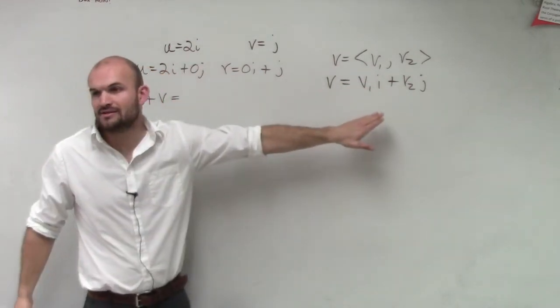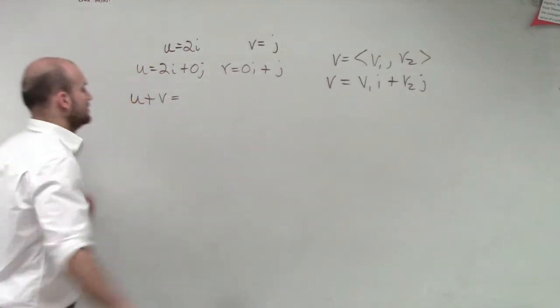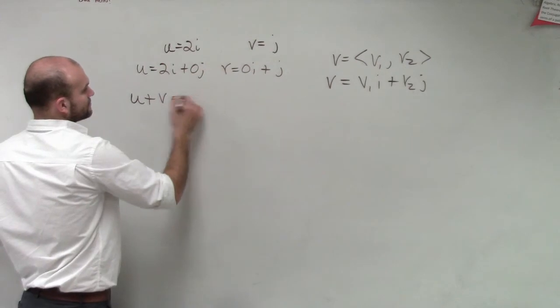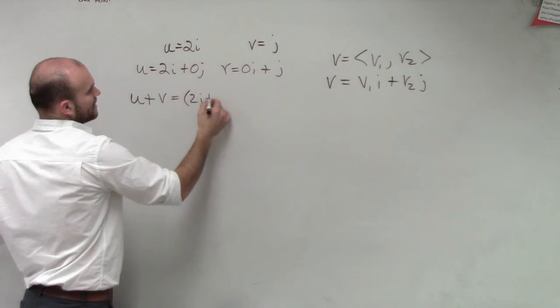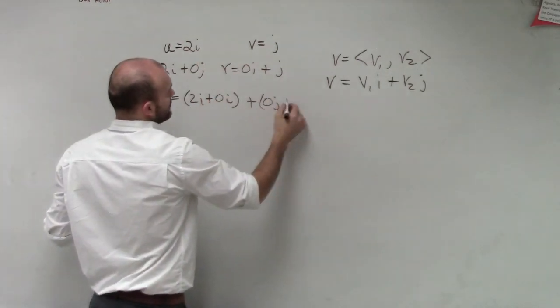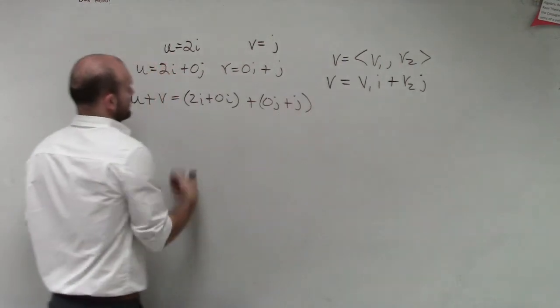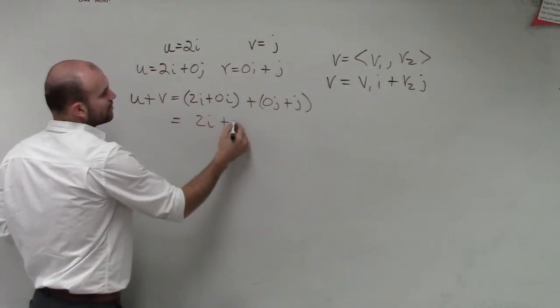Well, now it's going to be the same thing, but now it's going to be v1i plus v2i. So we just say, now my component form, my vector, is going to be 2i plus 0i plus 0j plus 1j. So therefore, my resultant vector is going to be 2i plus j.